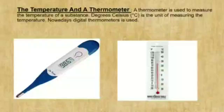A thermometer is used to measure temperature. Degrees Celsius is the unit of measuring temperature. There are several types of thermometers available, but nowadays we use digital thermometers for frequent use.